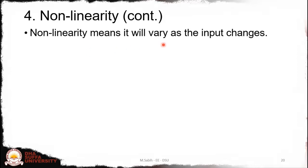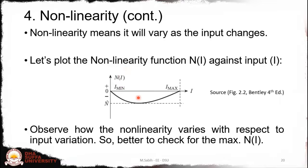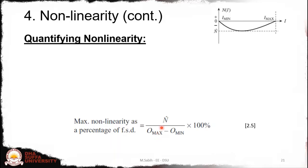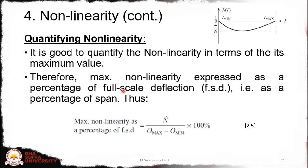Nonlinearity will vary as the input changes, so we plot the nonlinearity function against the input. When we plot nonlinearity against input, we see there is a maximum peak of the nonlinearity. It is better to quantify by calculating the maximum of the nonlinearity over the whole range. The value n-hat is the single value corresponding to the maximum or peak of the nonlinearity relative to the ideal straight line.